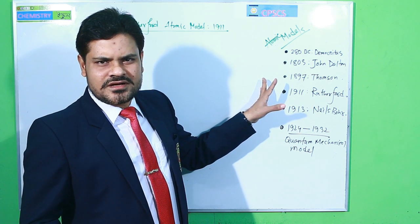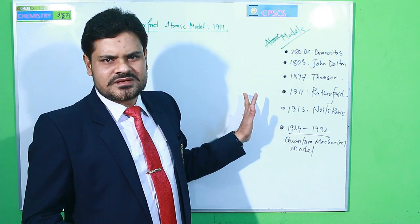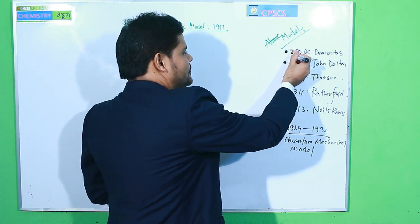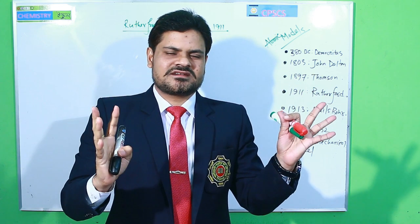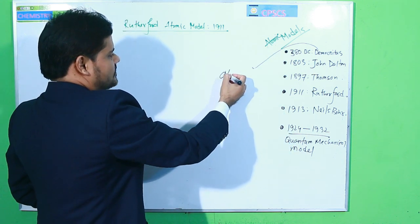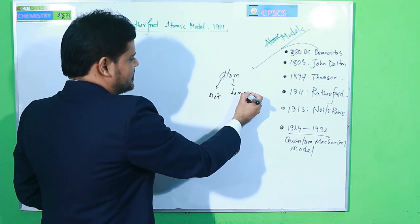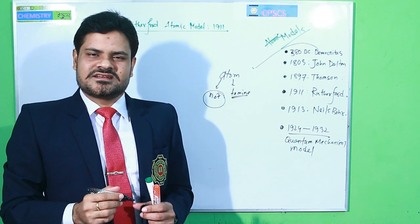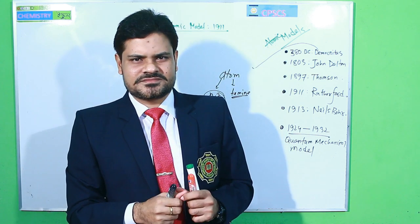In 380 BC, Mr. Democritus — the scientist — first said that the smallest particle of matter is the atom. Democritus used the word 'atom': 'a' means 'not' and 'tomnine' means 'divisible.' So Democritus said that the smallest particle of matter is the atom, which cannot be divided.